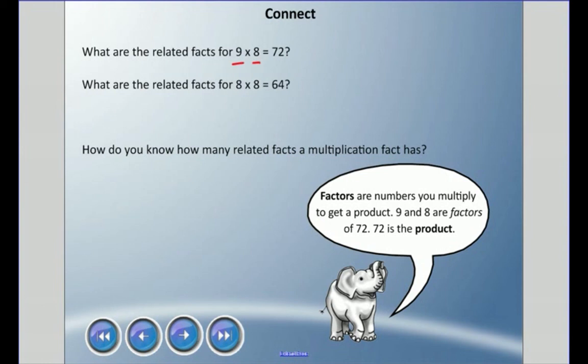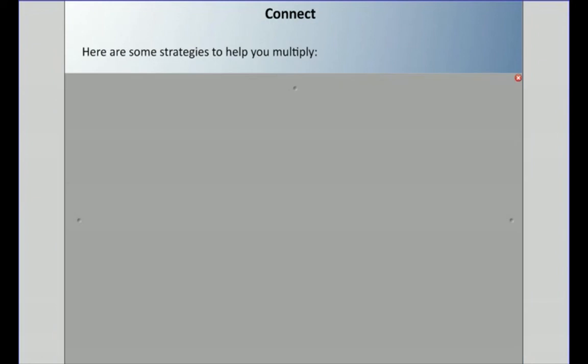Factor, factor — and the product is the answer when we multiply. So for nine times eight equals 72, nine and eight are factors and 72 is the product. Let's talk about some strategies you can use to help you multiply.